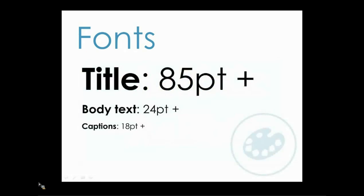The bigger the better for text size. Don't use anything smaller than 18-point font for text, and if you really need to, 16-point font for tables. Using larger font size makes it easier on your audience — they do not have to crowd in to read your content, but can instead stand from afar and take more of your poster in while reading. Remember, people should be able to read from five feet away.